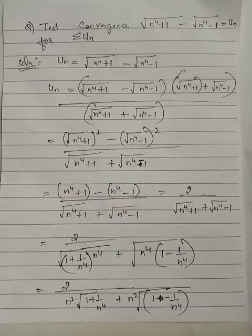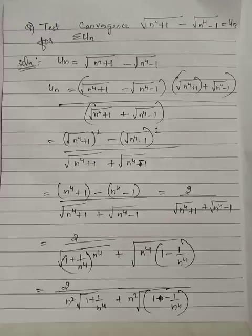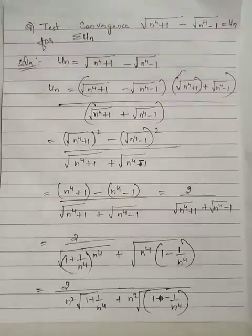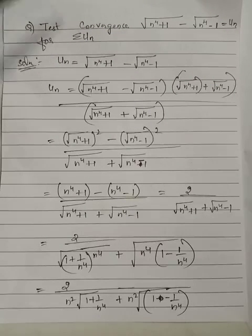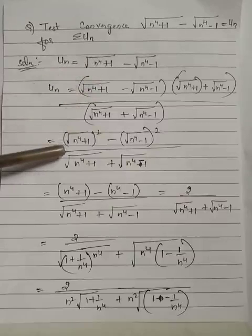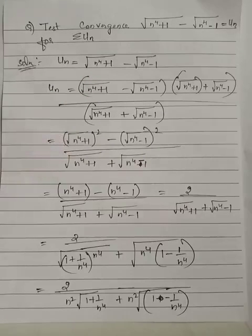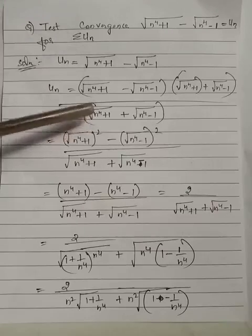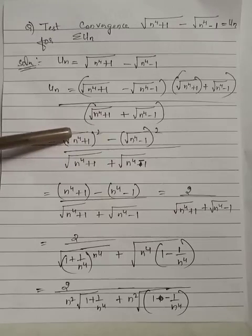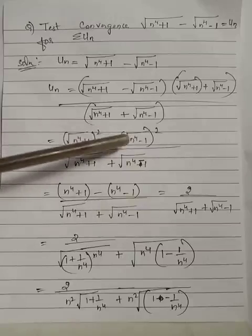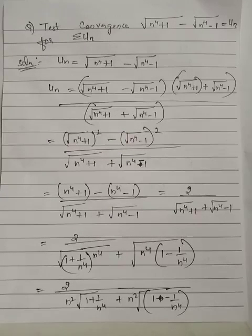We multiply root of n raised to 4 plus 1, plus root of n raised to 4 minus 1, to the numerator and denominator of un. This is of the form (a minus b)(a plus b), which can be replaced by a squared minus b squared. Therefore the numerator reduces to the square of root(n⁴+1) minus the square of root(n⁴-1), upon the same denominator.